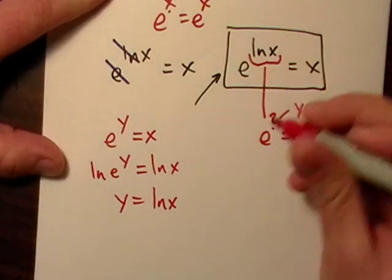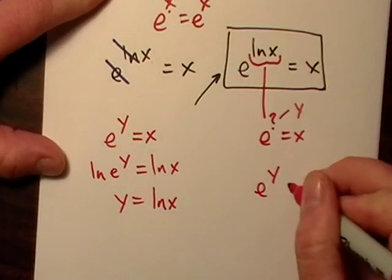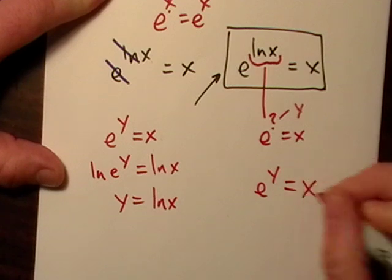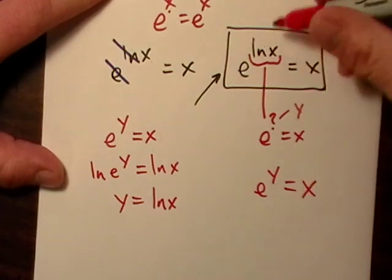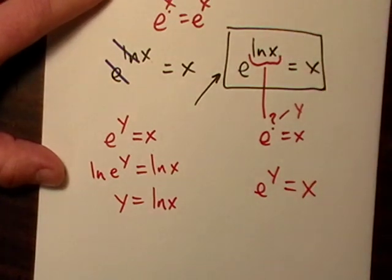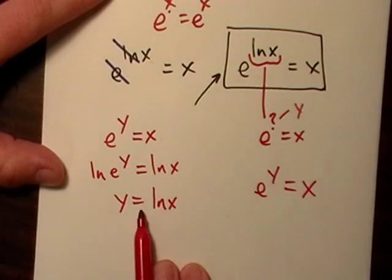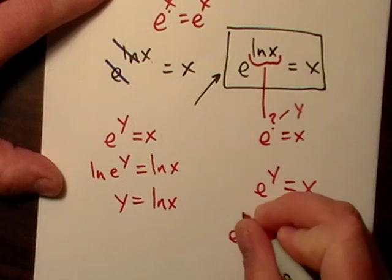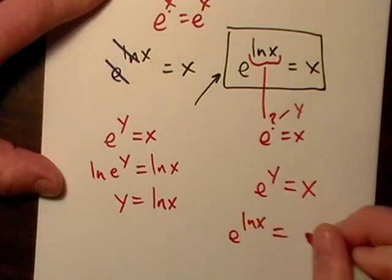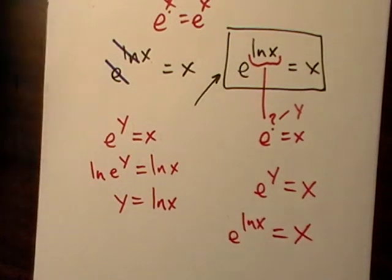And recall that back here we had e to the y being equal to x, because that's what that meant up there. That just meant we didn't know what it meant. And it shows us that y is actually equal to natural log of x. This isn't formal by any means, but I hope this at least gives you kind of a notion of where some of this stuff comes from.